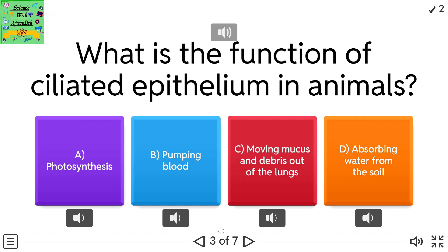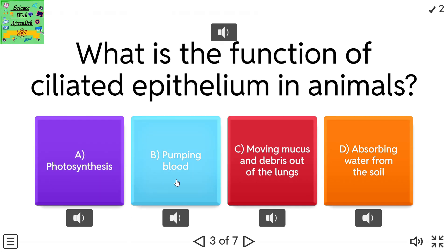What is the function of ciliated epithelium in animals? A: photosynthesis. B: pumping blood. C: moving mucus and debris out of the lungs. D: absorbing water from the soil.